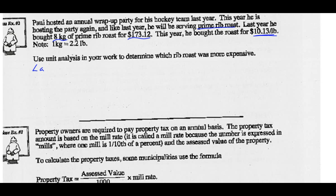Let's look at last year's rib roast. Last year, he bought eight kilograms for $173.12. So $173.12 for eight kilograms. What would his unit rate be? Well, let's divide those out. Figure what the price per kilogram is. $173.12 divided by eight is $21.64 per kilogram. So that was last year's price per kilogram.